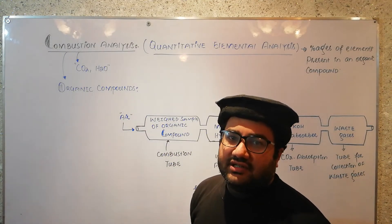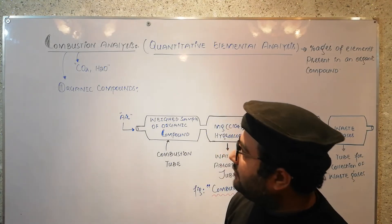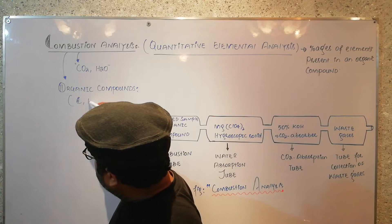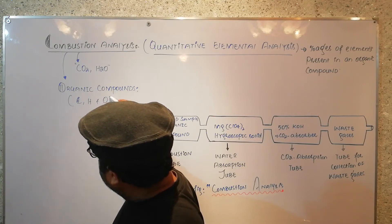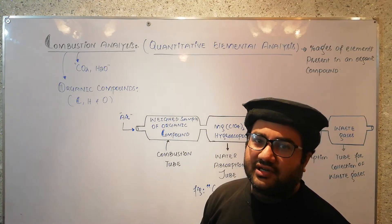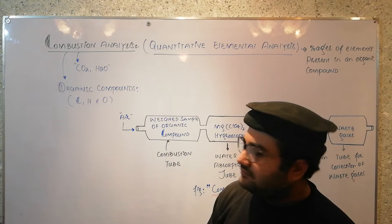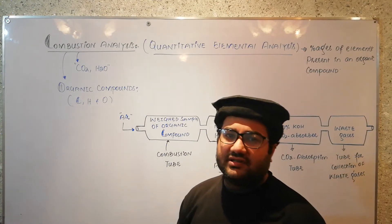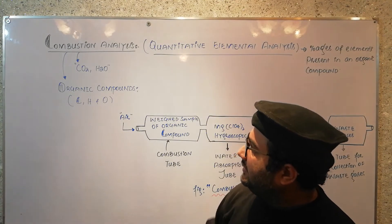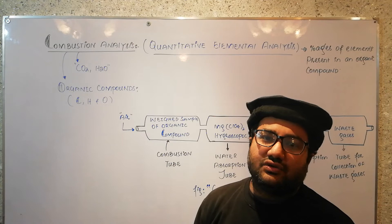There is a limitation: combustion analysis is not used for every organic compound, but only for those organic compounds having carbon, hydrogen, and oxygen. Sometimes nitrogen can also be detected but that becomes very complex, so we will exclude it. We will limit ourselves to organic compounds that have carbon, hydrogen, and oxygen only. So you can say it is a type of CHO analysis.